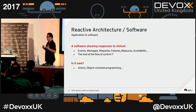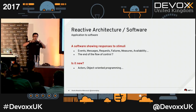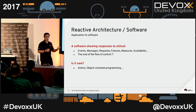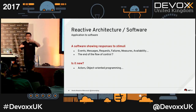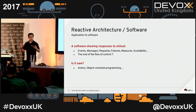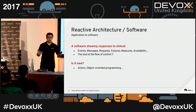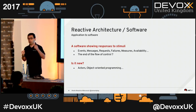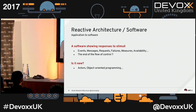What are those stimuli? It can be almost anything — and that's really why we have so many reactive things, because we don't have the same type of stimuli everywhere. It can be events, messages, requests, failures, the availability of services or devices, battery level on a mobile phone, network connectivity. All of this is stimuli. But you don't control them.